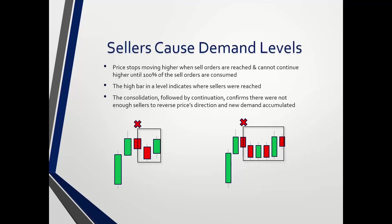The consolidation followed by continuation confirms there were not enough sellers to reverse price's direction and new demand accumulated. It's not enough just to have the consolidation — that only tells me there's an accumulation of buy and sell orders. I need more information. The consolidation, then followed by the continuation, confirms that indeed there were not enough sellers to reverse prices direction, and thereby new demand has accumulated. In order to get through the sellers, buyers have to regain their composure, accumulate once more, and then departure takes place.